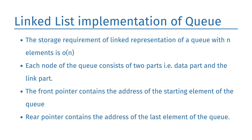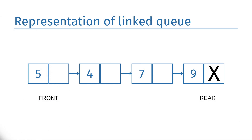Due to the drawbacks of array implementation, it cannot be used for large-scale applications. An alternative is the linked list implementation of a queue. The storage requirement for a linked queue with n elements is O(n), while the time requirement for operations is O(1). In a linked queue, each node consists of two parts: a data part and a link part. Each element points to the immediate next element in memory. Two pointers are maintained — a front pointer, which contains the address of the starting element, and a rear pointer, which contains the address of the last element. Insertion and deletion are performed at the rear and front ends respectively. If both front and rear are null, the queue is empty.